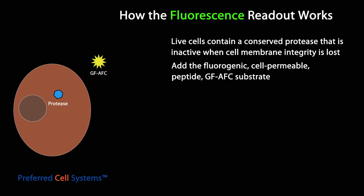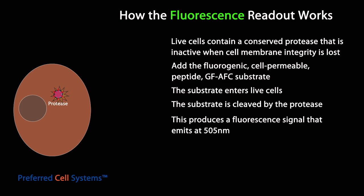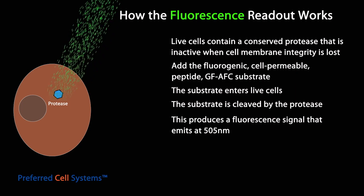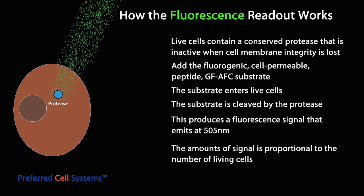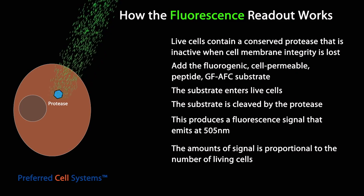The GF-AFC substrate is dissolved in the buffer provided. The dissolved substrate is added to each culture well at 0.1 milliliters. The substrate enters the cell and is cleaved by the protease to generate a fluorescent signal that excites at 380–400 nm and emits at 505 nm. The amount of signal produced is directly proportional to the number of live cells present in the culture.